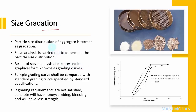Particle size distribution of aggregate is termed as gradation. Sieve analysis is carried out to determine the particle size distribution, and the results are expressed in graphical form known as a grading curve. To determine whether a particular grading is suitable, the sample grading curve shall be compared with the standard grading curve specified by standard specifications. The grading curve has been prescribed for a 20 mm size aggregate as per IS 383-1970, showing an upper and lower limit. Whatever sample is tested using sieve analysis should fall within this range. If grading requirements are not satisfied, concrete will have honeycombing, bleeding, and less strength.